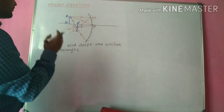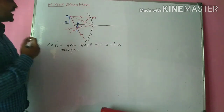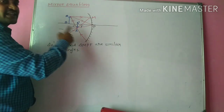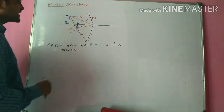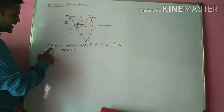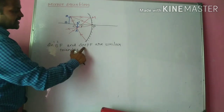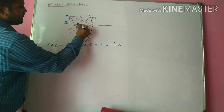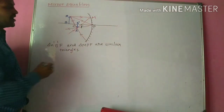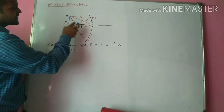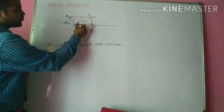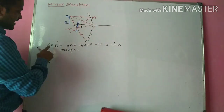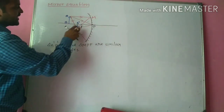For similar triangles, the ratio of the sides is equal to the ratio of the bases. For triangle A'B'F and triangle MPF, the side of triangle A'B'F is B'A', and the similar side in triangle MPF is PM. I am putting dots here for easy identification of the triangles.